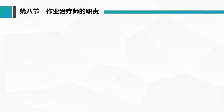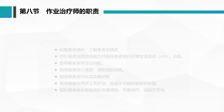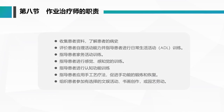第八节，作业治疗师的职责。第一，收集患者的资料，了解患者的病史；第二，及时评价患者的自理能力；第三，指导患者进行日常生活活动的训练；第四，指导患者进行家务活动训练；第五，指导患者进行感觉感知训练；第六，对患者进行认知功能的训练。